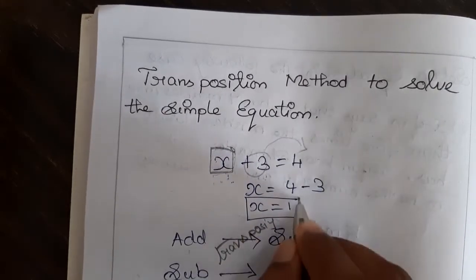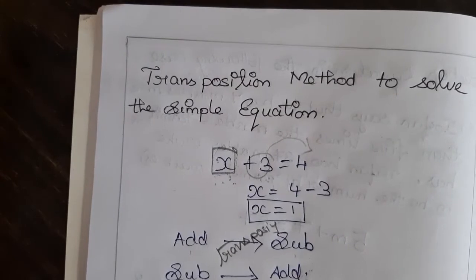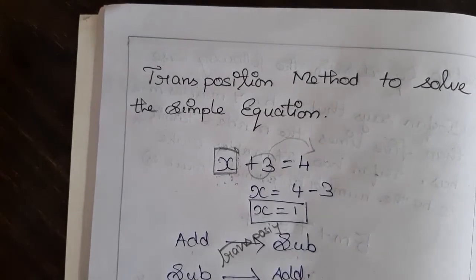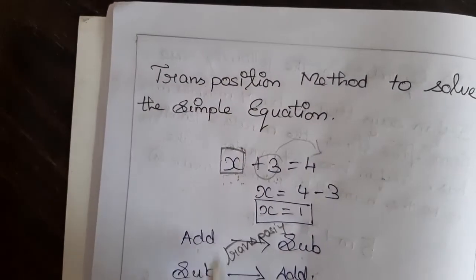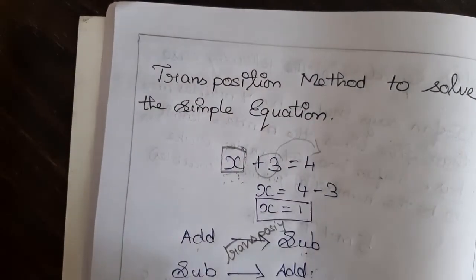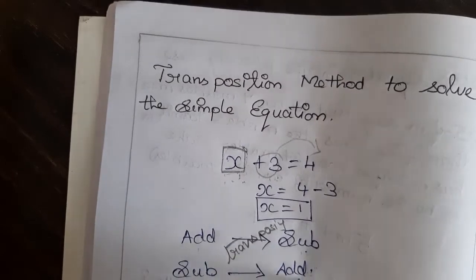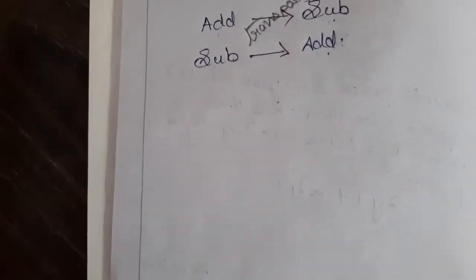So what is the x value? x is equal to 4 minus 3, which is 1. Now we get the solution for the simple equation. So if it is addition, while transposing it will become subtraction. If it is subtraction, while transposing it will become addition.